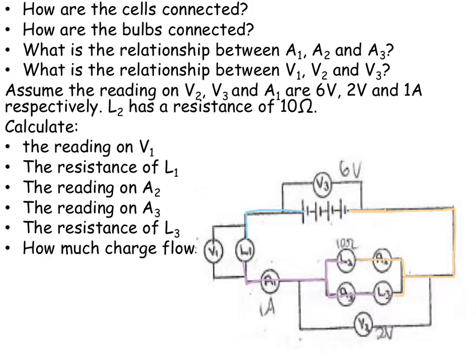How are the bulbs connected? Well, L1 is on the main branch and it is in series with L2 and L3. So L2 and L3 are parallel, but L1 is series.